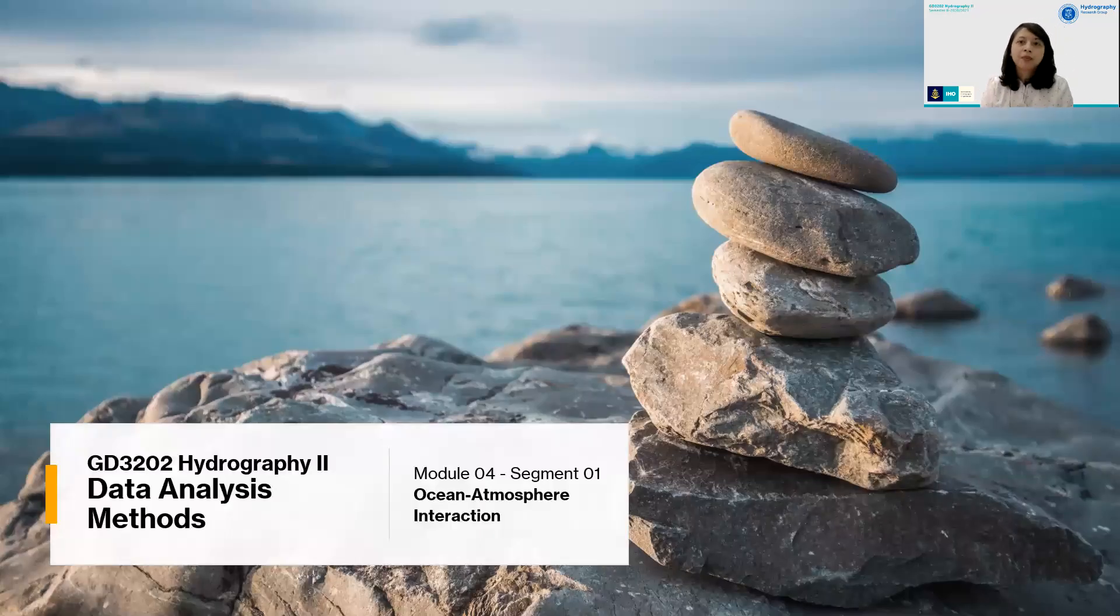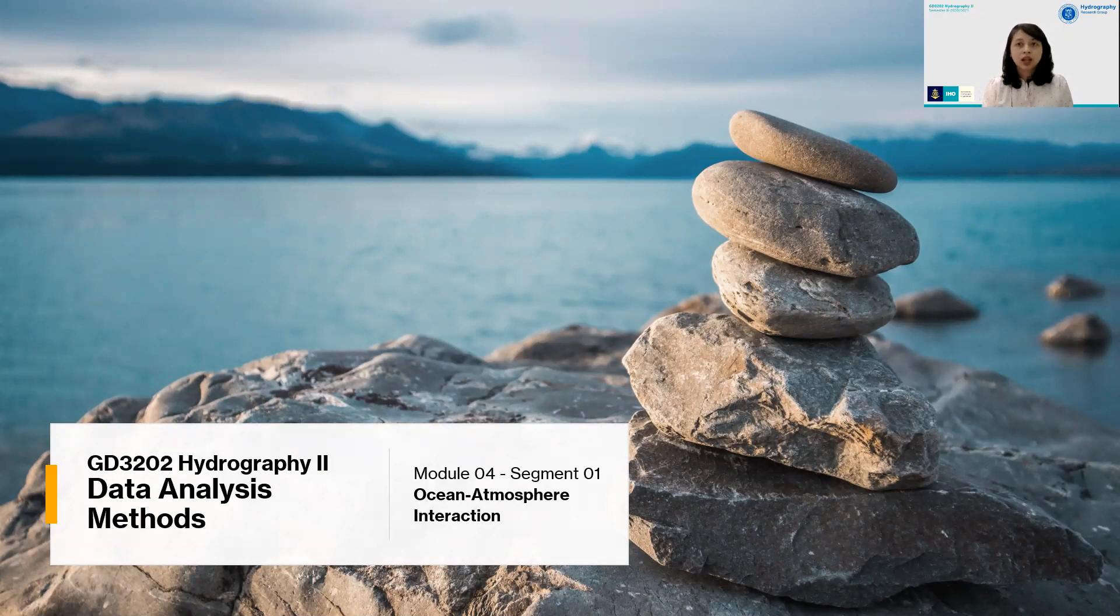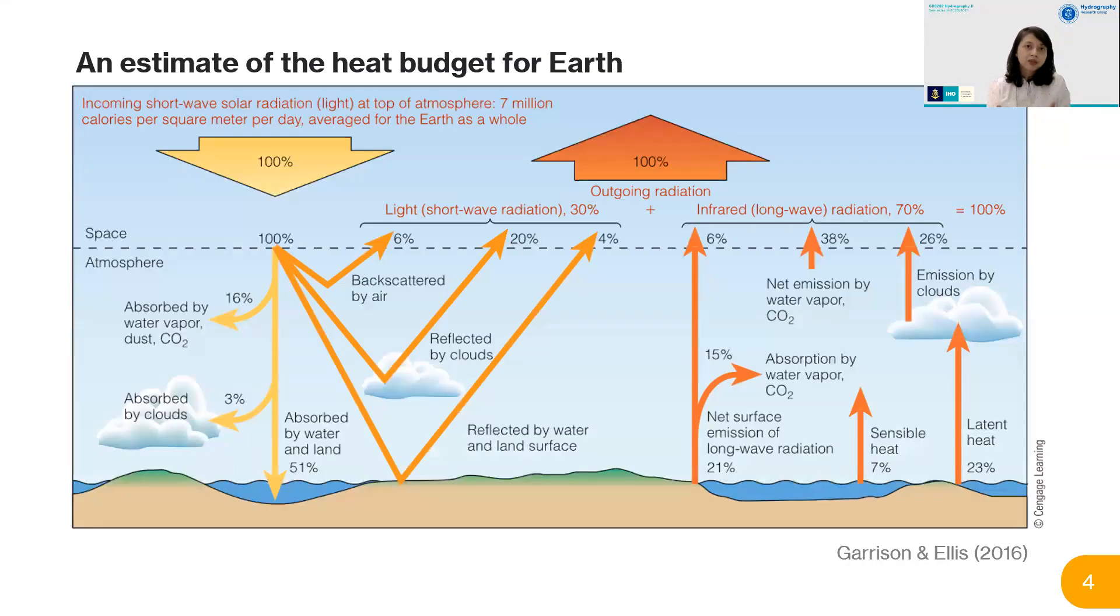Before we understand ocean-atmosphere interaction, we need to understand what's happening between our solid earth and atmosphere. We've got an atmosphere that is basically a blanket to our earth. All the heat that we sense in the solid earth is not directly coming from the sun—it's actually coming from the atmosphere acting as a filter. Some of this heat is reflected back to the atmosphere and then returns to earth. This is called the heat budget for the earth.